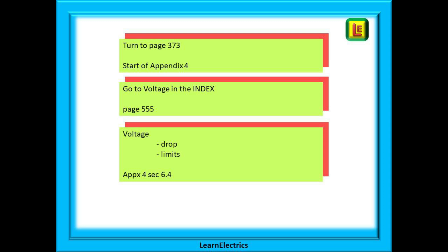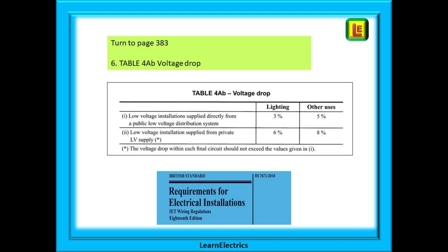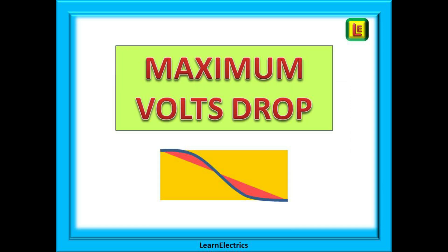I don't fancy looking through 72 pages to find the answer, so let's narrow it down even further. Go to the index and find voltage, which happens to be on page 555. Scanning down voltage, there are just a few entries and we want something that points to appendix four. Then we find one that says voltage drop limits and it tells us to look at appendix four section 6.4. So turn to page 383 and we will find in appendix four section 6.4 table 4AB voltage drop.